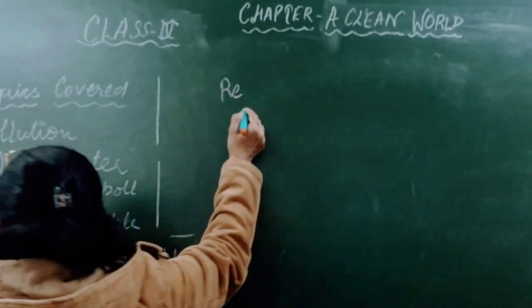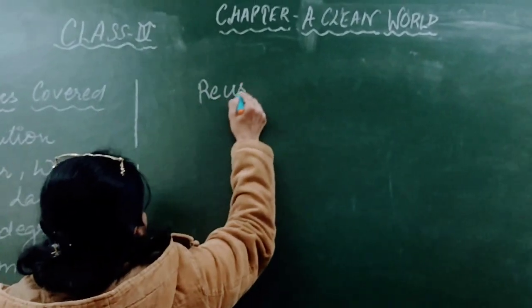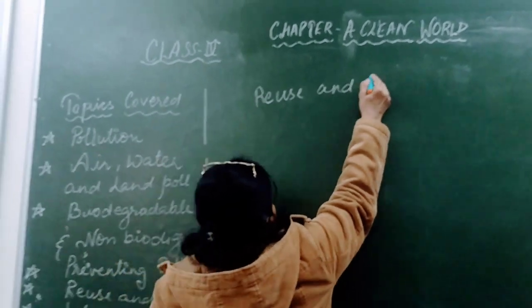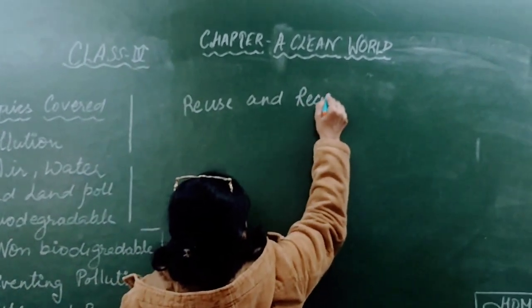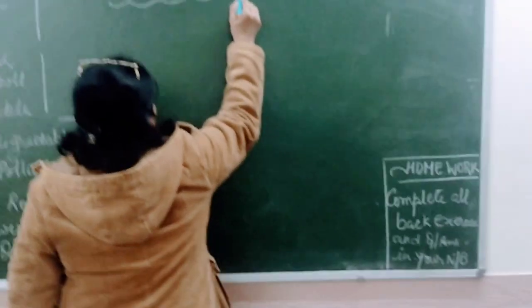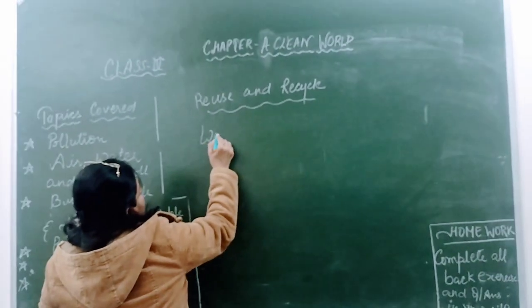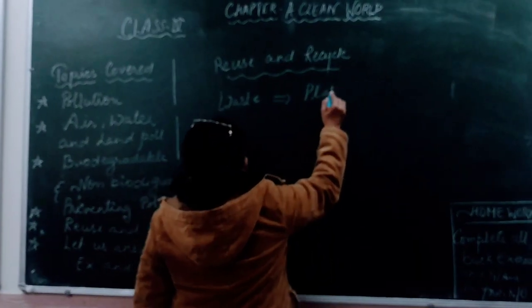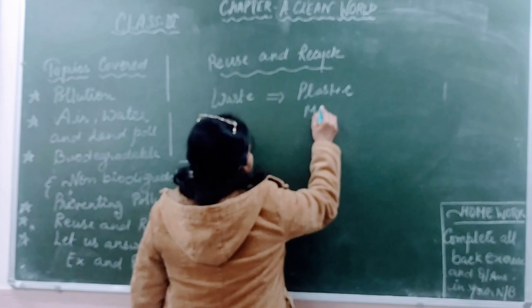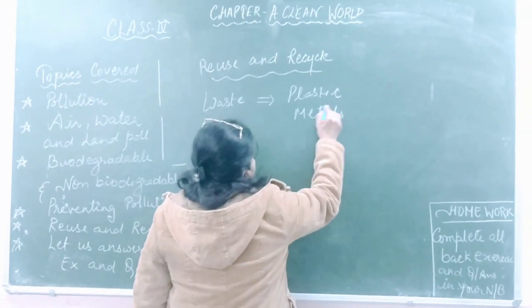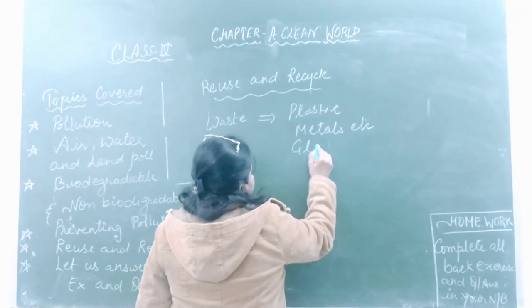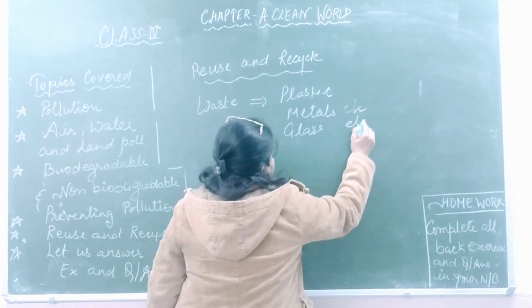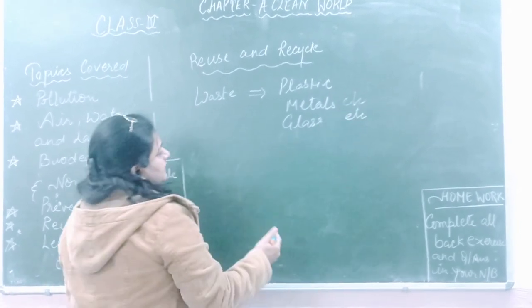It means we can reuse and recycle waste products — the type of waste products that are non-biodegradable, like plastic, some metals, and glass. These are the non-biodegradable waste.